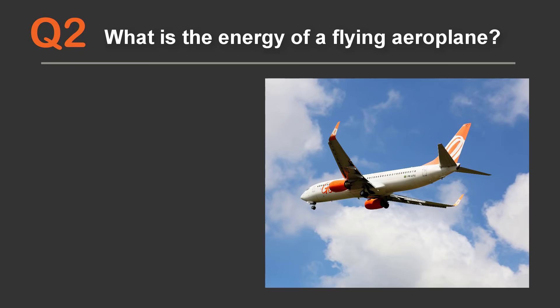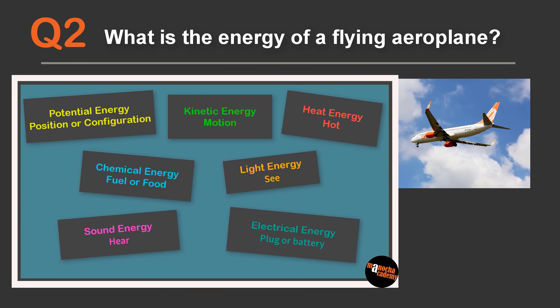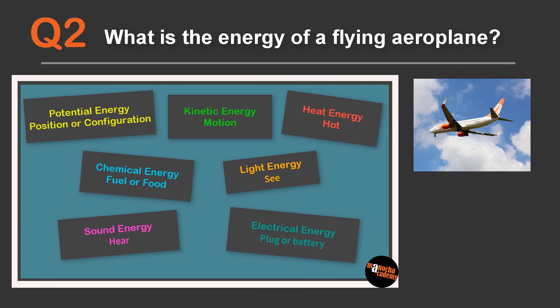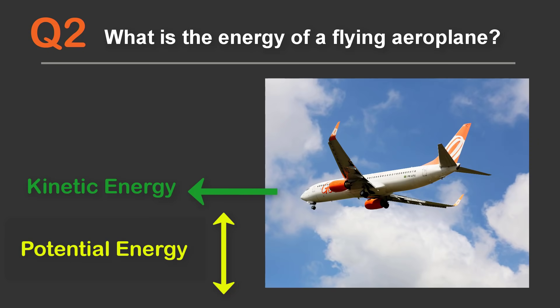Question 2: What is the energy of a flying aeroplane? It can be more than one form of energy. The answer is potential energy and kinetic energy. An aeroplane is at a height, so it has potential energy. Since it is flying and in motion, it also has kinetic energy. We can also say the aeroplane has mechanical energy, since mechanical energy is the sum of potential and kinetic energy.